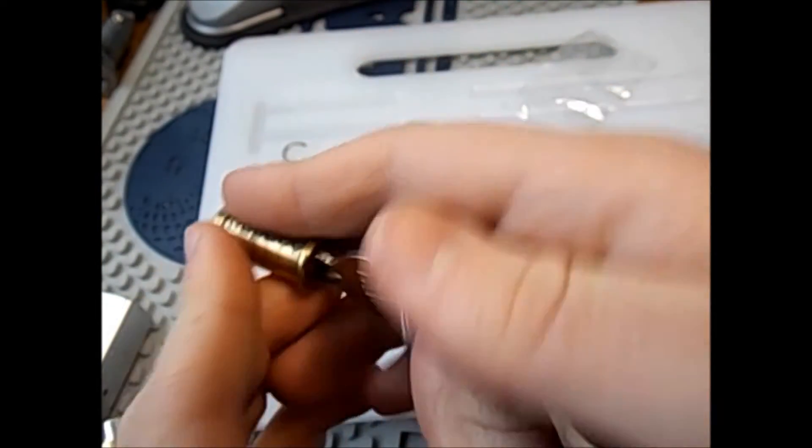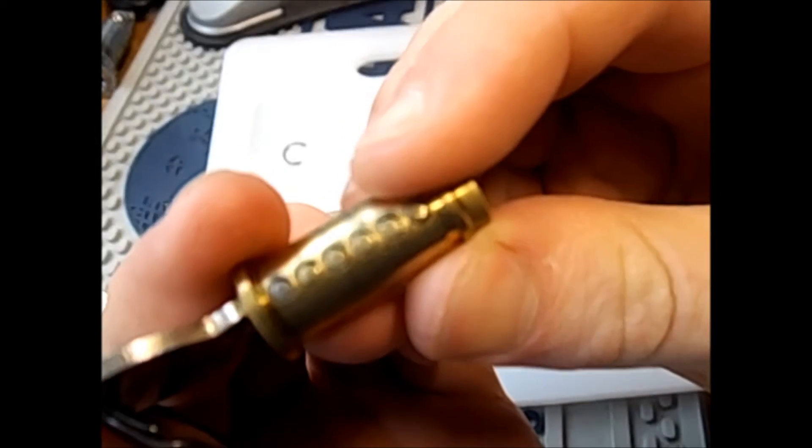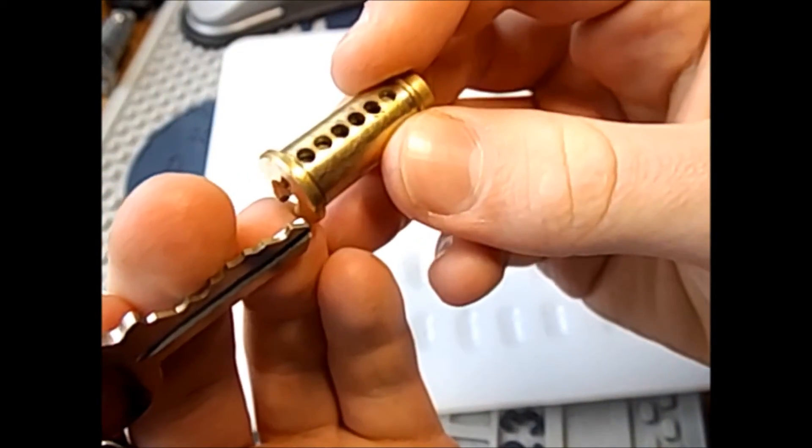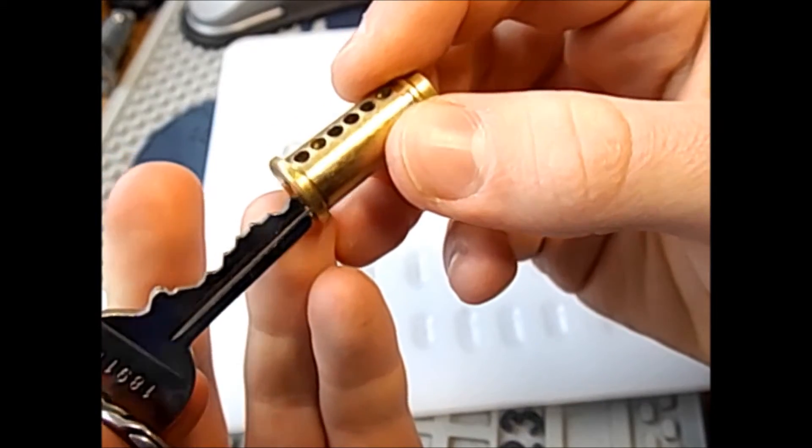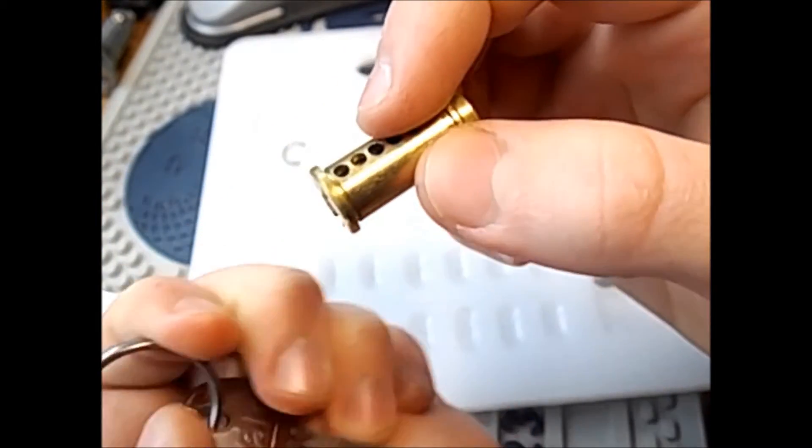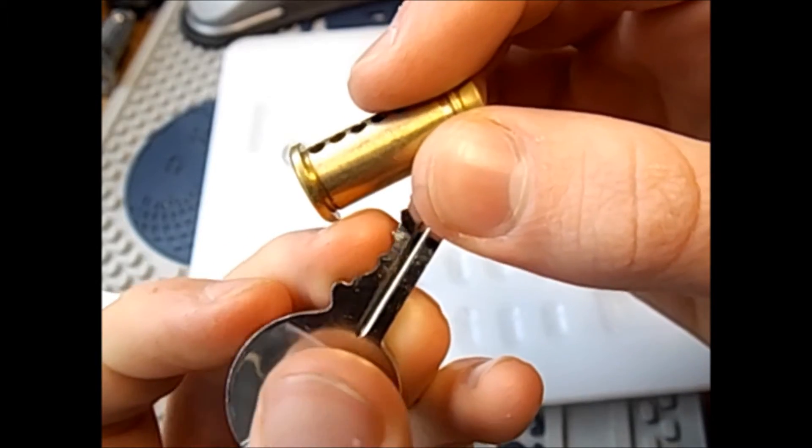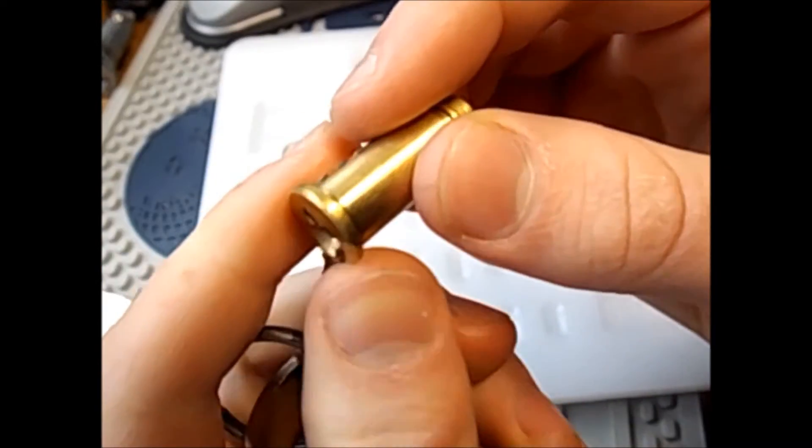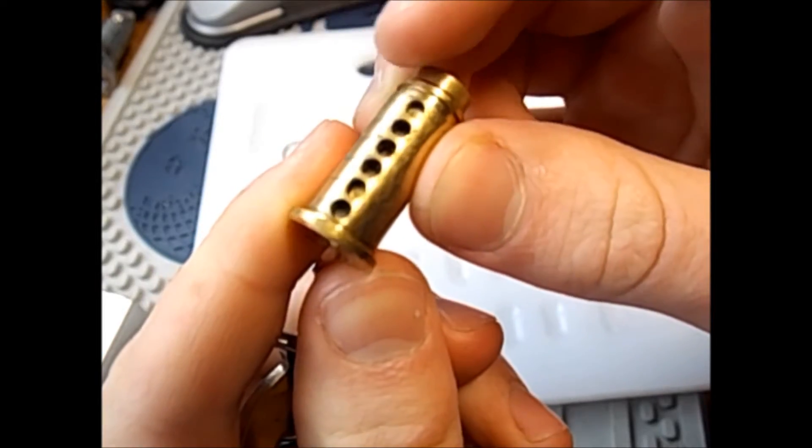Right. Ok. So, what have we got? Ok. Keys can be a little bit deceptive because by the key you'd think that pin 2 didn't have to be lifted very far at all. But it actually has to be lifted a fair bit.